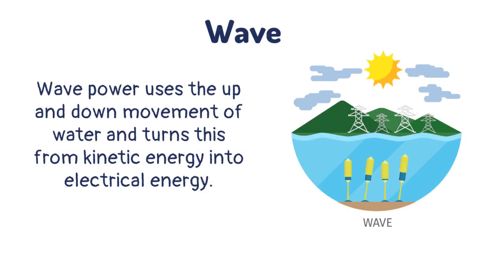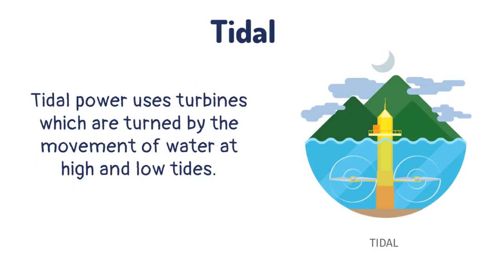Wave power uses the up and down movement of water and turns this from kinetic energy into electrical energy. Tidal power uses turbines which are turned by the movement of water at high and low tides.